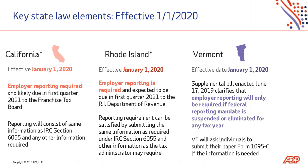Finally, let's look at Vermont. This is a supplemental bill that was enacted June 17, 2019, and it clarifies that employer reporting will only be required if the federal employer reporting mandate is suspended or eliminated for any tax year. Vermont will ask individuals to submit their paper Form 1095 upon request if the information is needed.